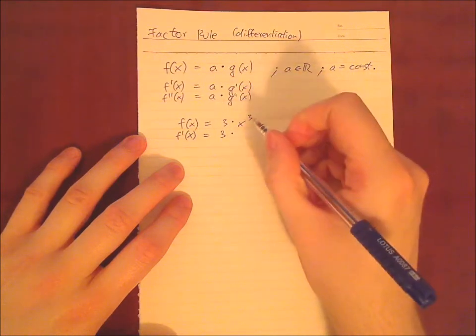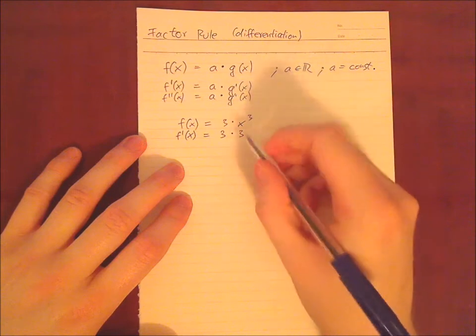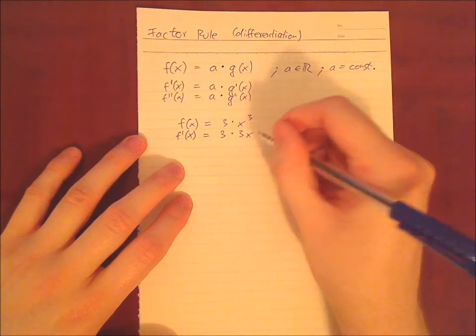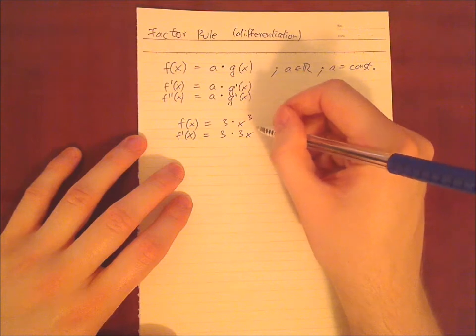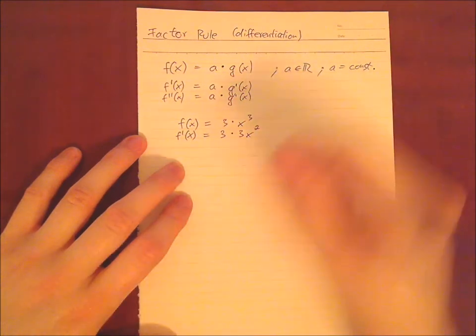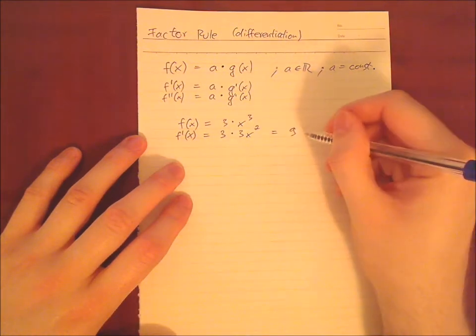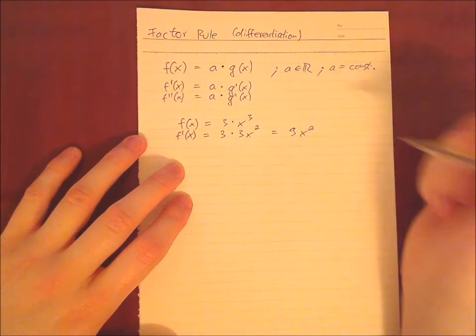When we differentiate one time, the factor stays exactly where it is. And the power rule then says, we take the 3, write it in front of the x, and we subtract 1 of 3, which is then 2. Right? So, if we multiply it, we have 9x to the power of 2.